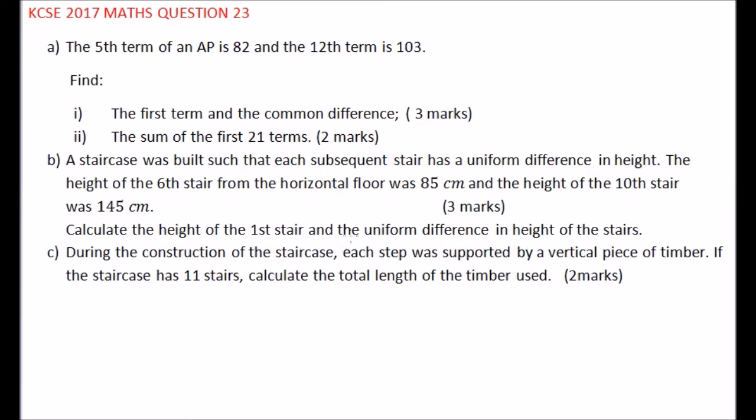Part B of the question: we are told the staircase was built with subsequent stairs having a uniform difference in height. The height of the sixth stair from the floor is 85cm and the tenth stair is 145cm. We use the first stair as our first term and the uniform difference as our common difference. So A plus N minus 1 into bracket D. For the sixth stair, A plus 6 minus 1 is 5, D is equal to 85.